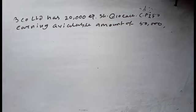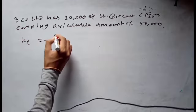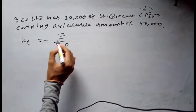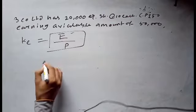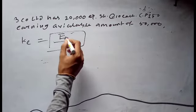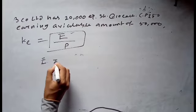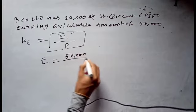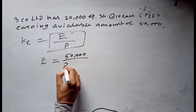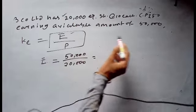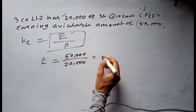We need to calculate the cost of equity share capital by applying the Earning Price Ratio method. Under this method, the formula is: ke (cost of equity capital) = E/P, which is Earning Per Share divided by Price Per Share (market price per share). The Earning Per Share (E) = Total Earnings / Number of Shares = ₹50,000 / 20,000 = ₹2.5.